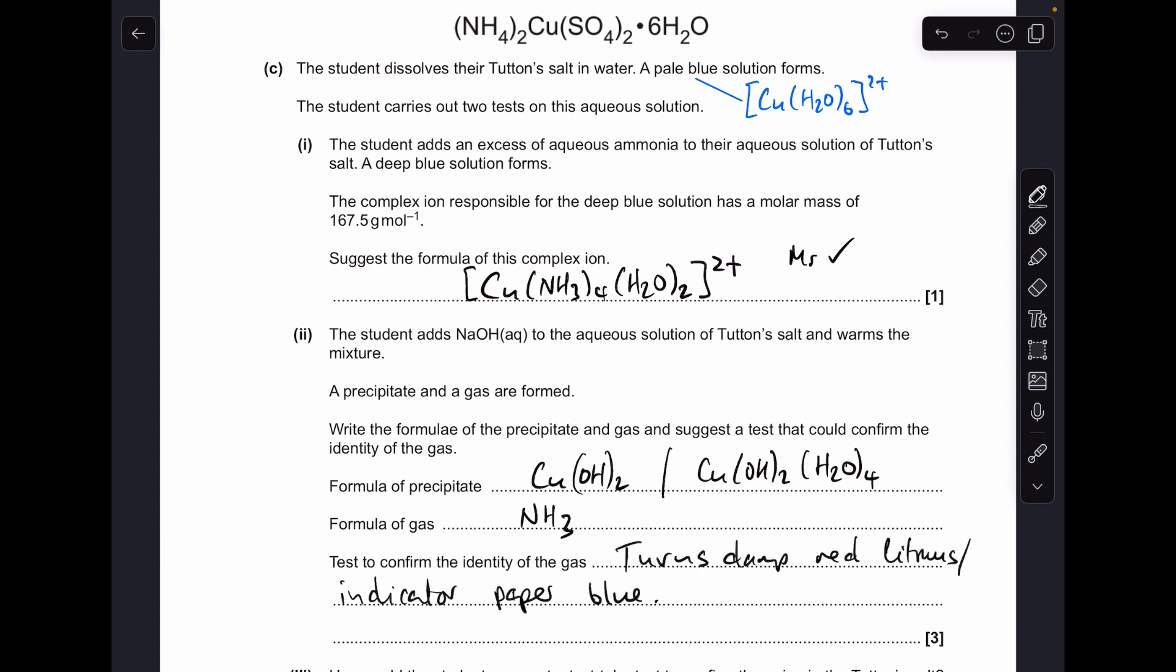And then what's the test to confirm the identity of the ammonia? It turns damp red litmus or indicator paper blue.